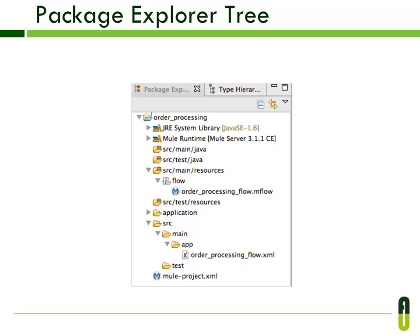In the Package Explorer tree, under src/main/java folder you can store custom Java classes. Under src/main/resources folder you can create a graphical flow. The Application folder is where you can store the Mule deploy.properties file.